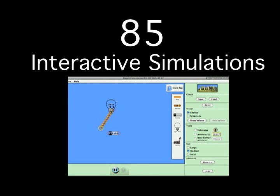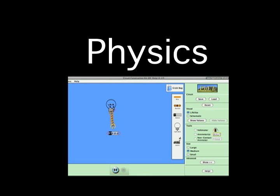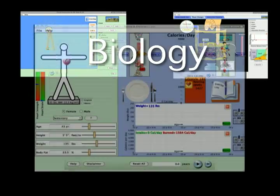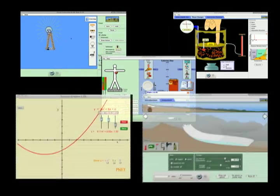PhET is a suite of over 85 interactive simulations available in over 40 languages, with broad coverage of introductory physics and quantum mechanics, expanding into chemistry and biology, with some sims in math and earth science.